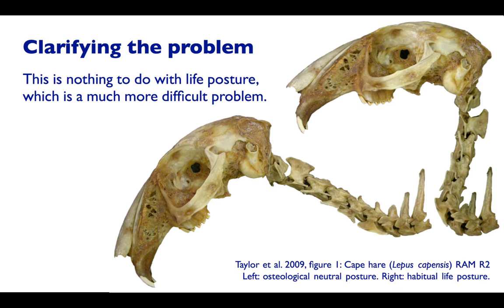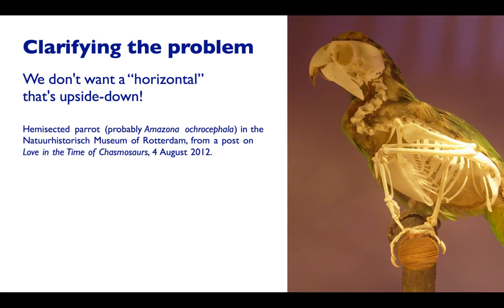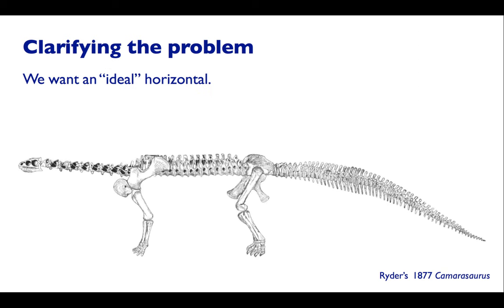To clarify, we're not at all talking here about life posture, which is a much more difficult problem. For example, here we see the head and neck skeleton of a cape hare. On the left, the vertebrae are articulated in their osteological neutral position, but on the right we see something much closer to its life posture, where it's cranked up past the vertical — and X-rays of live hares show this is correct. We really know very little about the posture of extinct animals. A parrot's neck curves back in an S-shape, and we certainly don't want to define horizontal as meaning an upside-down posture for vertebrae in the middle of such a sequence. We're thinking about an ideal horizontal, much like Rieder illustrated in this Camarasaurus — the first known skeletal reconstruction of any sauropod — where the neck, torso, and cranial part of the tail are pretty much completely horizontal.